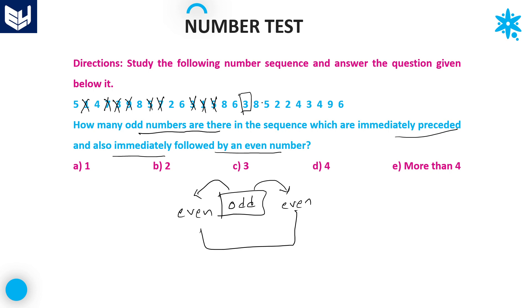Next 5 also satisfies — it is followed by even and preceded by even. Then another 3 — also satisfied, followed by even and preceded by even. After that 9 — also satisfied, followed by even and preceded by even. Total how many odd numbers satisfy the given condition? Four — that is, 1, 2, 3, 4. The number of odd numbers preceded and followed by even is 4. Option D is the right answer.